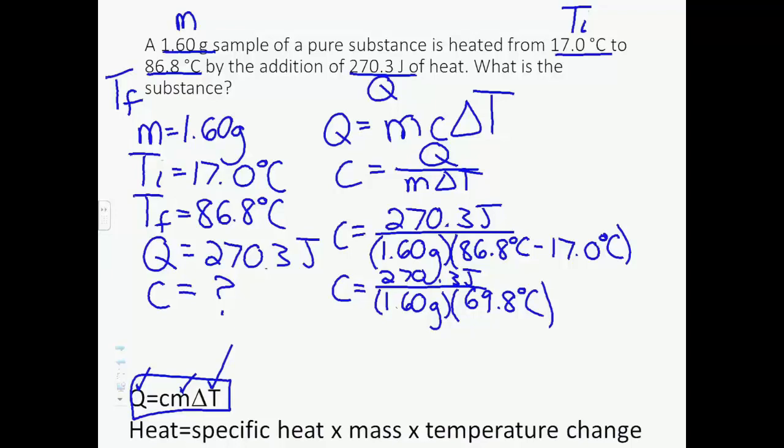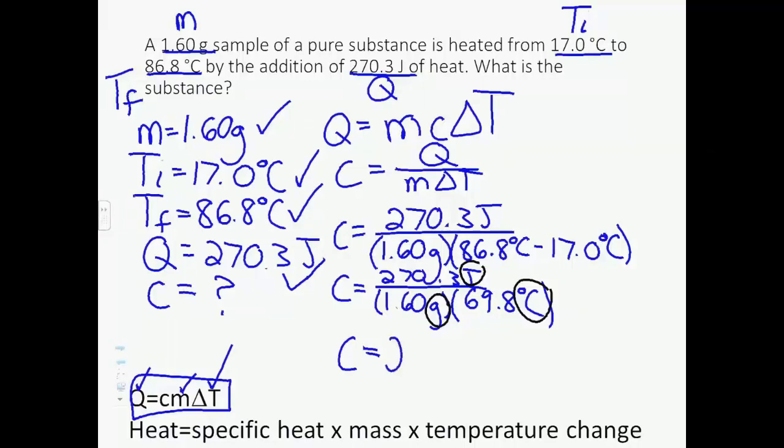What are our units? Does anything cancel? No. So we've got joules divided by grams divided by degrees Celsius. 270.3 divided by 1.60 divided by 69.8 equals C. Let's look at our sig figs before we write down the answer. Three in mass, three in temperature initial, three in temperature final, and four in Q. So that means we've got a total of three sig figs to report. 2.42 joules per gram degrees Celsius.